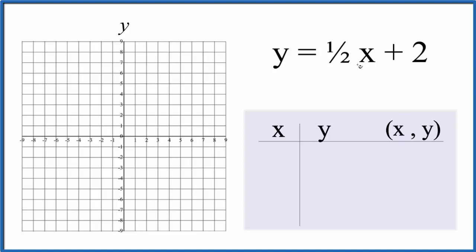So let's just put some values in for x. I like to start by putting a zero in for x. One-half times zero, that's zero. Zero plus two, that gives us two for y.